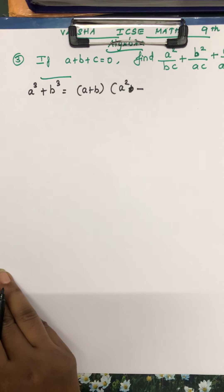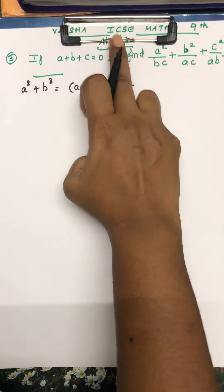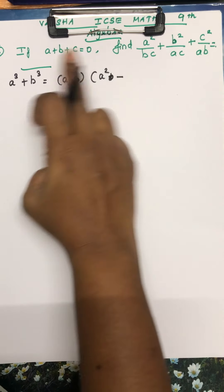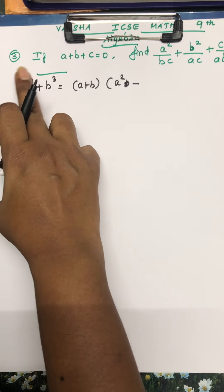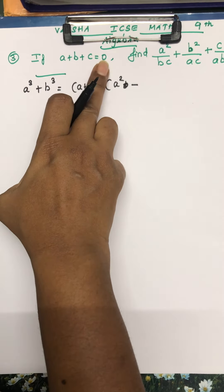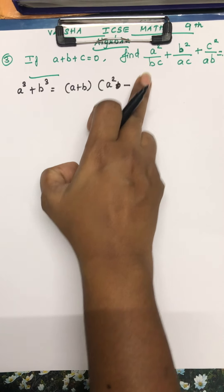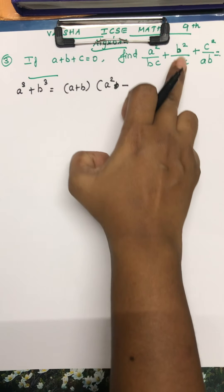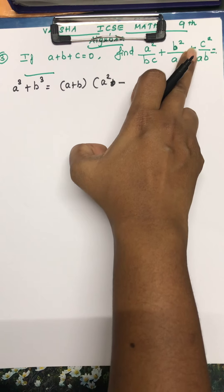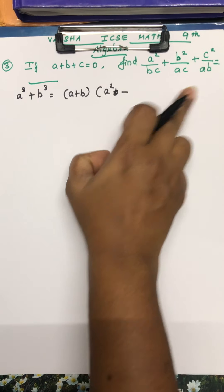Hi students, this is Varsha CBC Max. This is a video for ICSE Class 9 standard. See the question from the algebra lesson: if A plus B plus C equals 0, find A squared over BC plus B squared over AC plus C squared over AB.